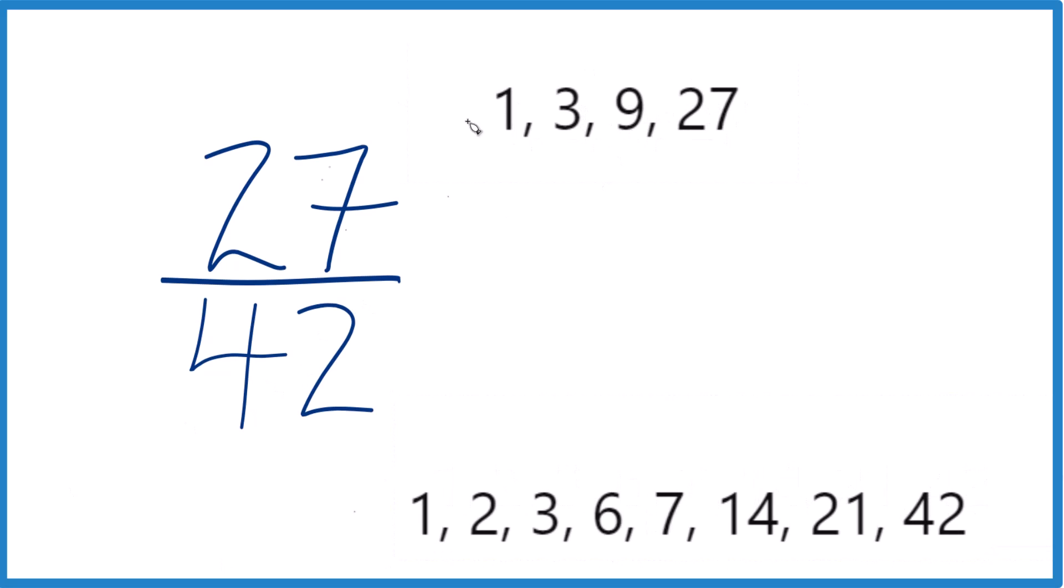We're trying to find a factor that these have in common. 1, of course, 1 is in common. 3, we see 3. 9, I don't see 9. 27, I don't see that. So 3 is the greatest common factor here.